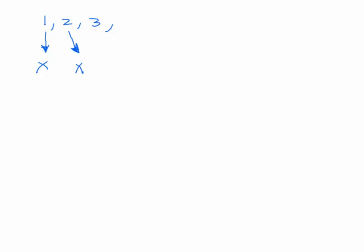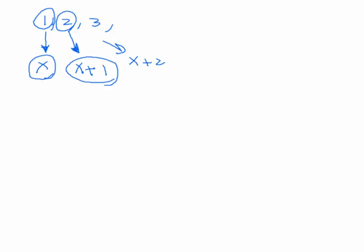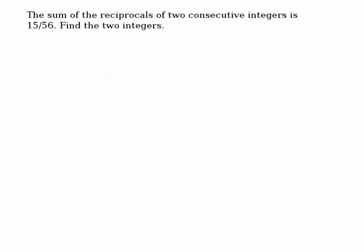So the next one after that would be x plus 2. So we're talking about two consecutive integers. We're going to let the first one equal x, and the one after that would be x plus 1.